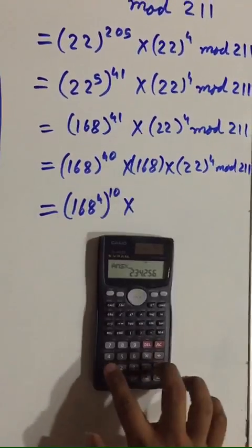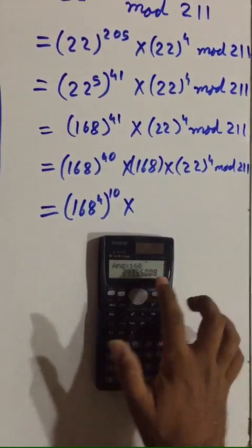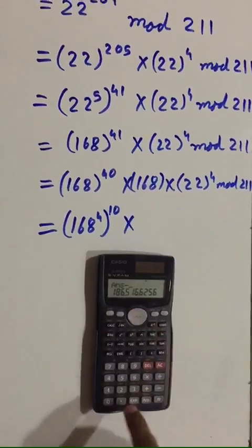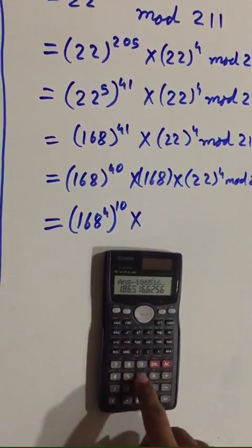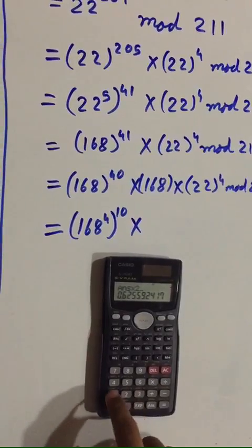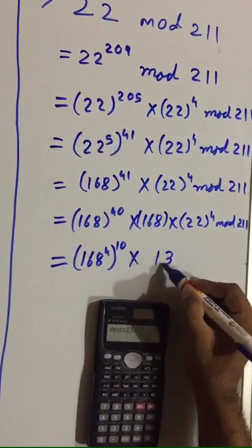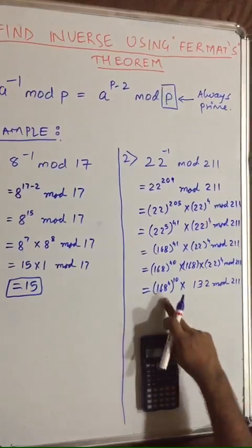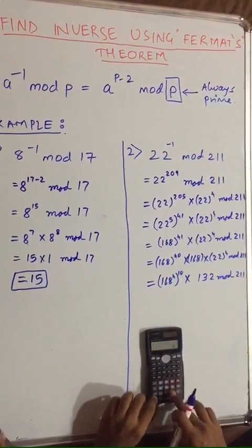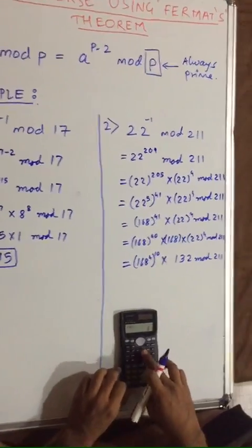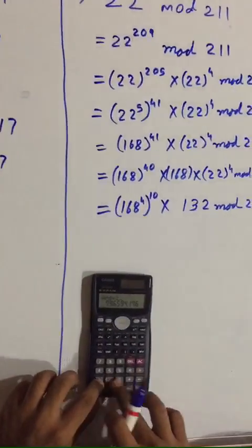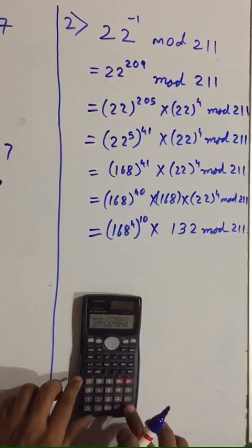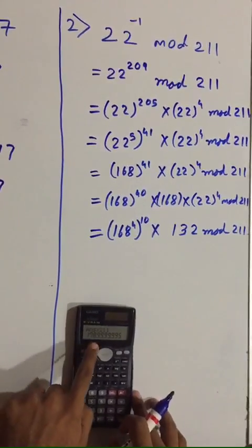So we multiply 22 raised to 4 with 168. Divide this number by 211, then subtract all the numbers before the decimal — 186516 — and multiply it with 211. This gives us 132 mod 211. Now we have to find 168 raised to 4 mod 211. Divide by 211, subtract 3775327, and multiply by 211. This gives us 179. So we now have 179 raised to 10 into 132 mod 211.